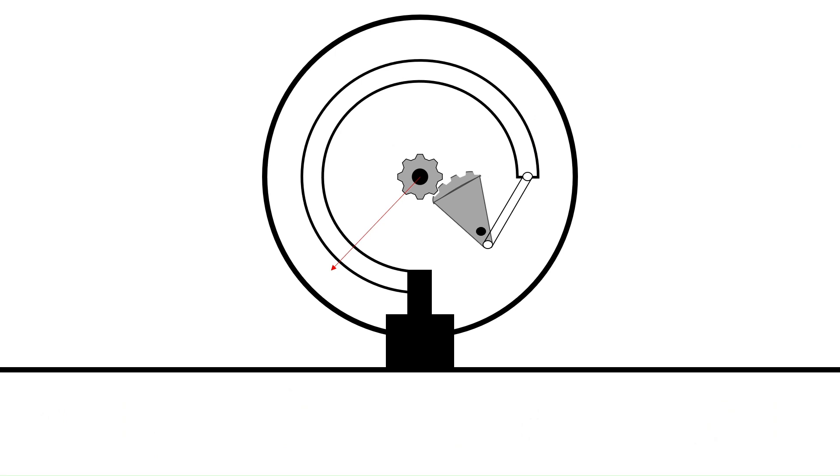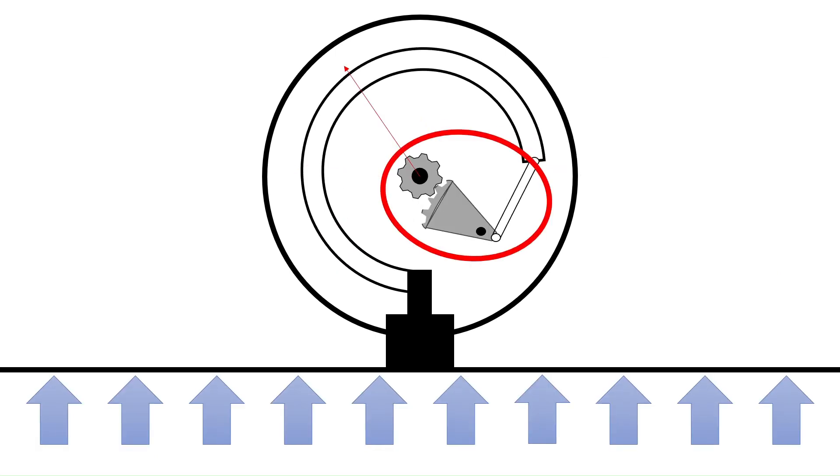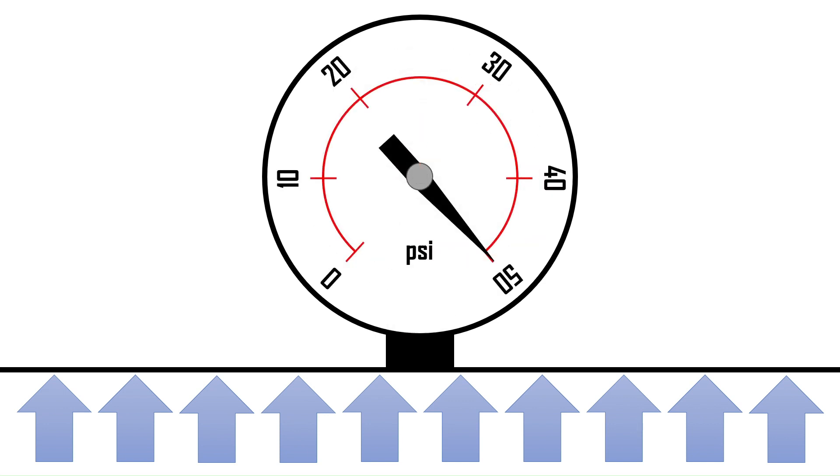Because of this, the position of the end of the tube correlates to pressure. The end of the tube is linked mechanically to the indicating dial which displays the pressure reading.